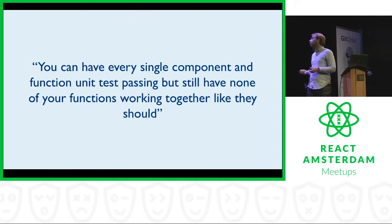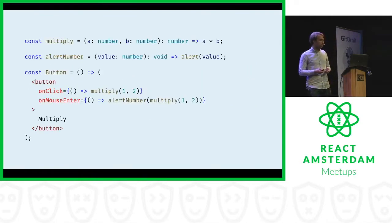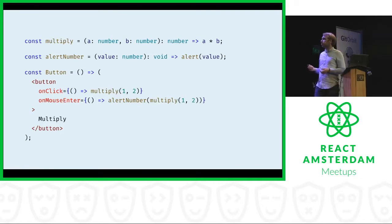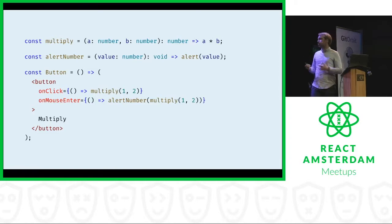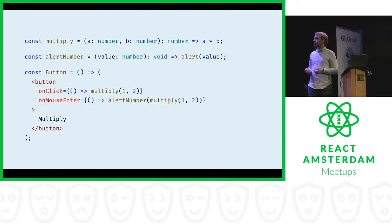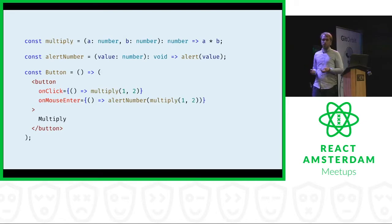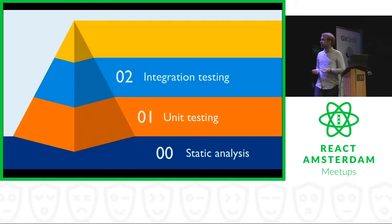But again, you can have every single component and function unit tested, and still have none of your functions working together like they should, because you're only testing whether they each separately do what they should be doing. Here's a simple example: the multiply function is this time working correctly, there's an alert number function which alerts a value, and I've built a button. I wanted the button to alert a multiplied number on click, but I forgot to include the alert number on the onclick — I put it on the onMouseEnter instead. This would pass the unit test. The snapshot would show it has an onclick handler with a function, but it doesn't show what kind of function it was. That brings us to the integration testing layer.